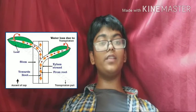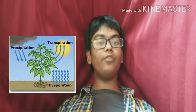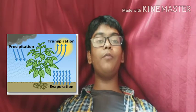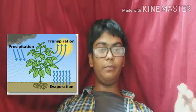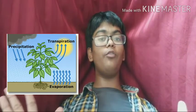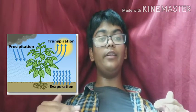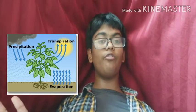Transpiration is the loss of water in the form of water vapour by the aerial parts of the plant. Water vapour is lost from the aerial parts — the stem and the leaves. Roots cannot perform transpiration.